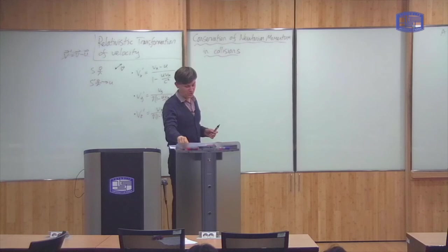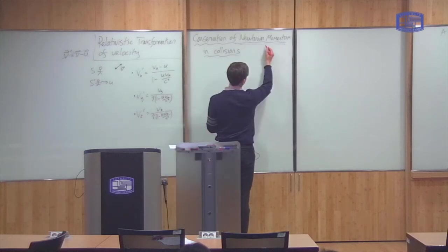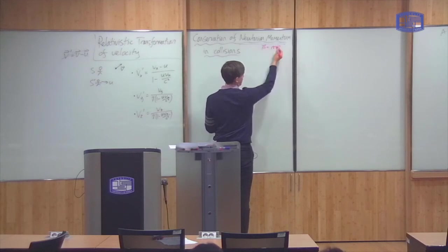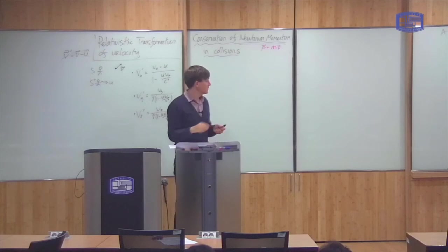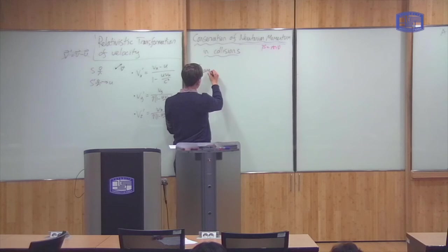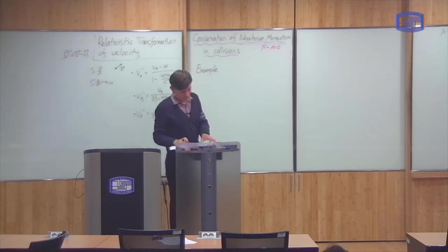We're going to look at conservation of Newtonian momentum. Newtonian momentum here just means the normal definition: P equals mass times velocity. I'm going to do this by way of an example — a simple two-body collision of the sort we looked at right at the start of the course.